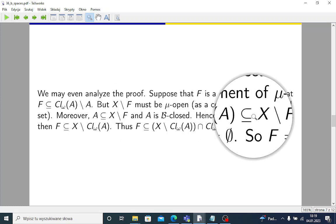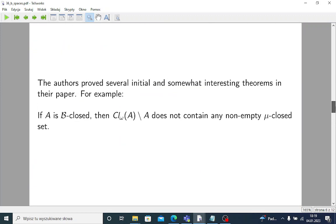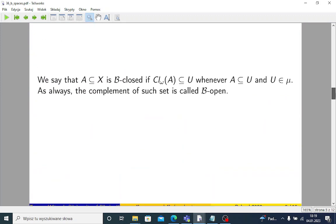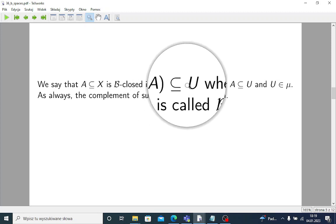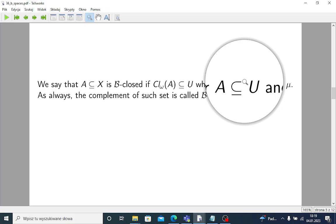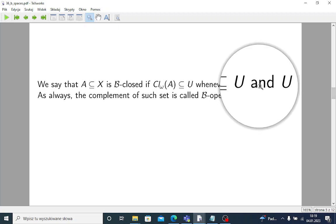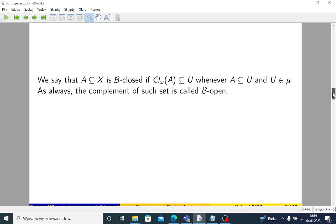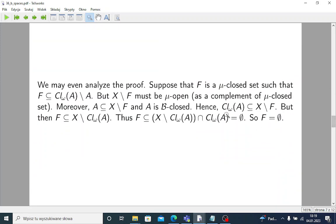Moreover, by assumption, A is B-closed. Hence, by the definition of B-closed sets, let us recall this definition, that omega closure of A is contained in any μ-open set such that A is contained in this μ-open set. So, now X minus F plays the role of U. So, omega closure of A is contained in X minus F.